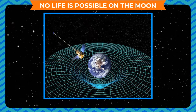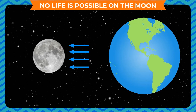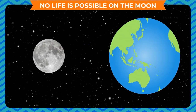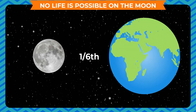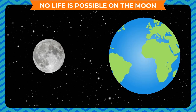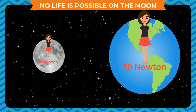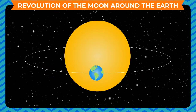Our earth attracts every object and heavenly body with a force called gravitational force. Similarly, the moon also attracts every object towards itself, but with a weaker force because its gravitational force is one-sixth of that on the earth. That is why your weight will be lesser on the moon. If your weight on the earth is 30 Newtons, it will be 5 Newtons on the moon.